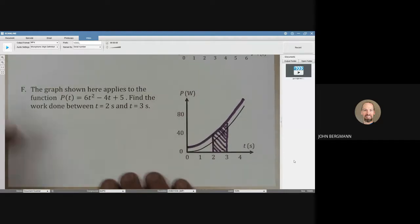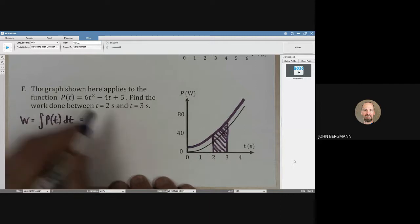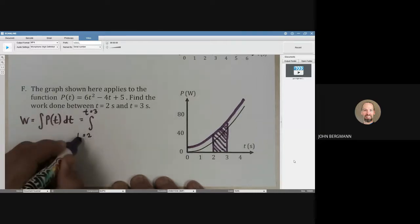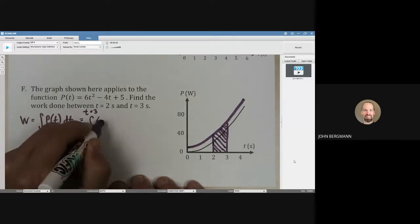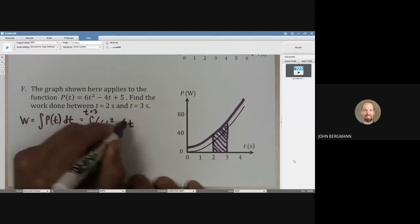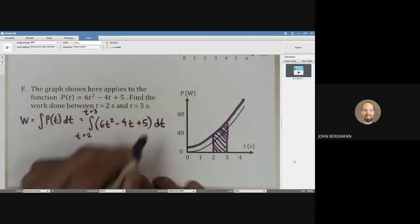Now if we have a function and we want to find area, then we're going to integrate that function. So the work done is going to be the integral of the power with time. So we're going to go from a limit of t equals 2 seconds to t equals 3 seconds. We're going to take that function and we're going to go 6t squared minus 4t plus 5, close parentheses, dt.